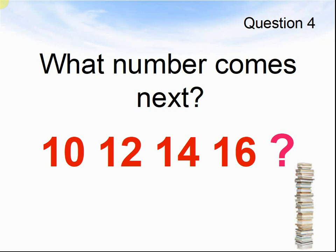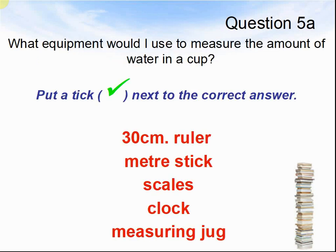Here comes question 5. What equipment would I use to measure the amount of water in a cup? Would I use a 30cm ruler, a metre stick, scales, clock or a measuring jug? Pause the video until you are ready for the next question.